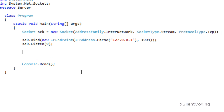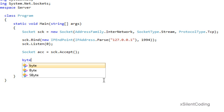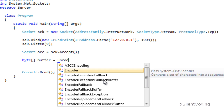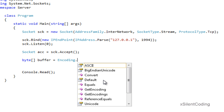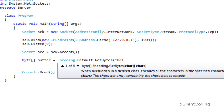Alright. Now, socket.accept equals socket.accept. You've seen this before — this will block until a connection is made and accepted. Now let's do a little receiving. Let's create a new buffer: byte array buffer equals Encoding.Default.GetBytes.